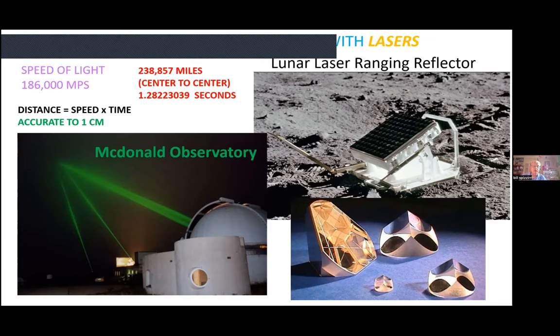The round trip took 1.2822 seconds; cut that in half and it comes out to about 238,000 miles. So with the laser and these special reflectors, we can find the distance to the Moon very accurately. Of course, the lunar laser ranger reflector exists in only one place in the universe that we know of, so that technique is limited to that object.